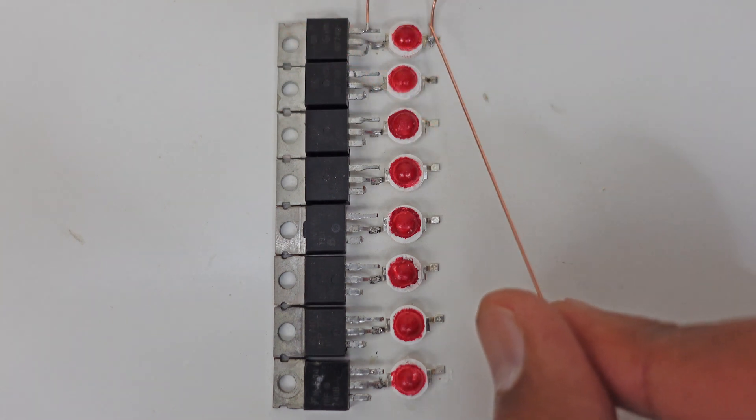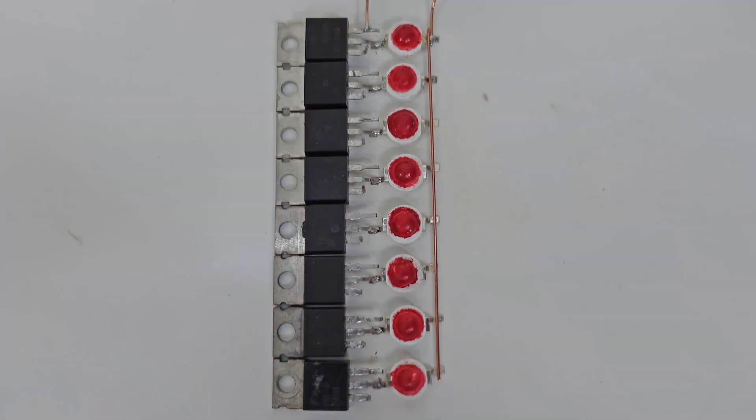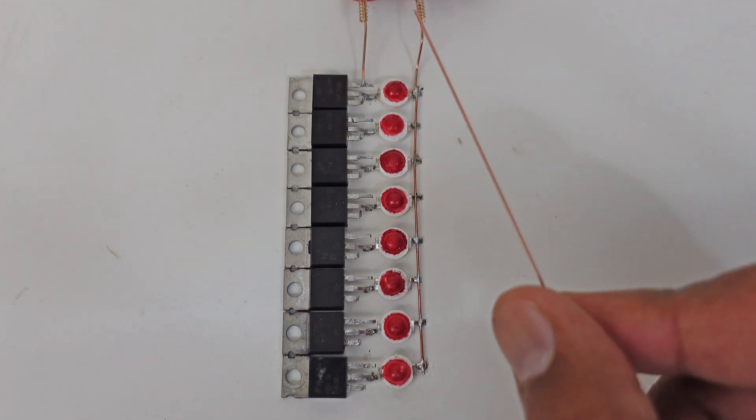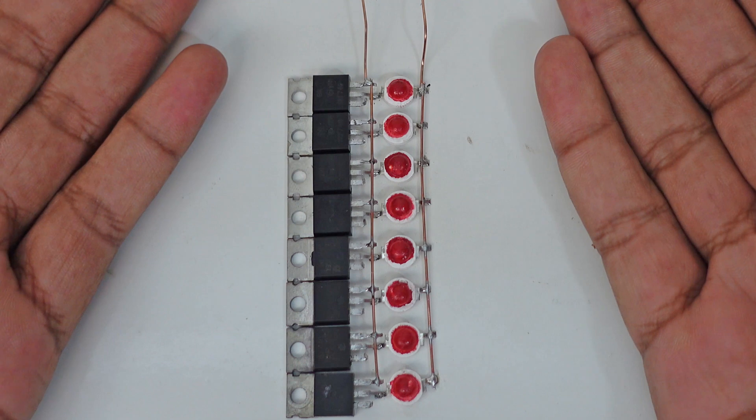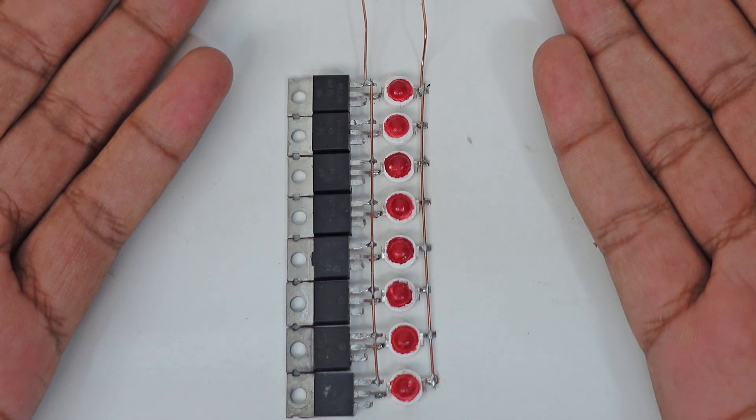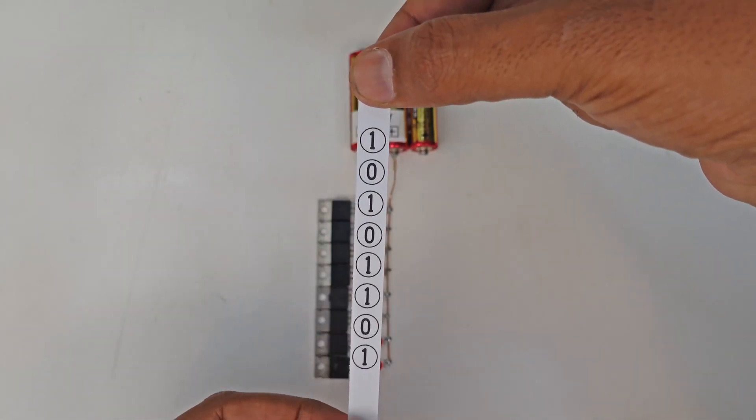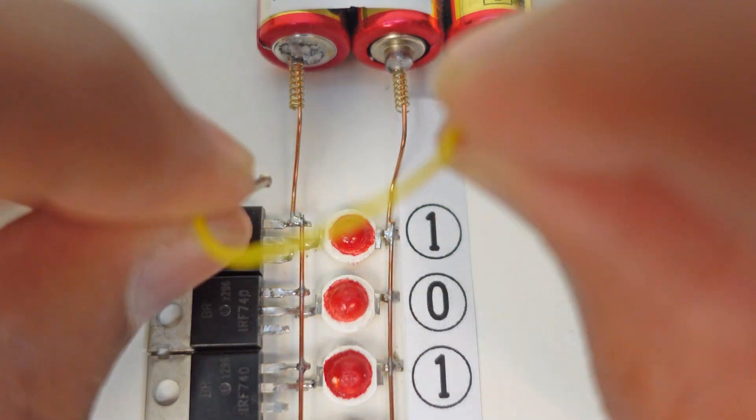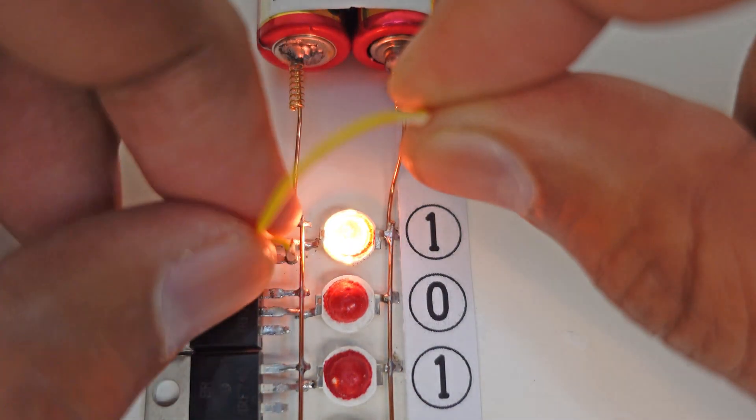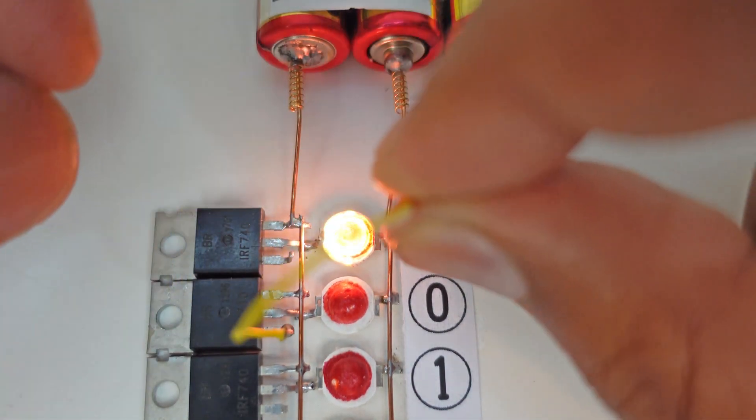Now we connect all the LED lights with the battery from the positive side. And connect all the MOSFETs to the battery from the negative side as well. Our one byte memory is ready to store data. This is our one byte data let's store it in our flash memory. The first bit is one, we turn the switch on. The second bit is zero, we turn off the switch.